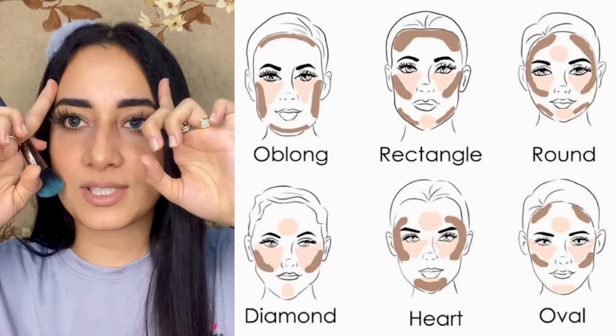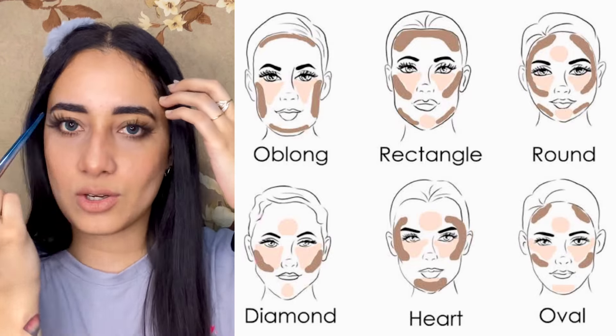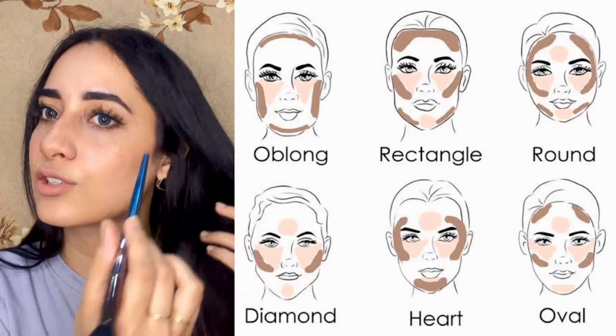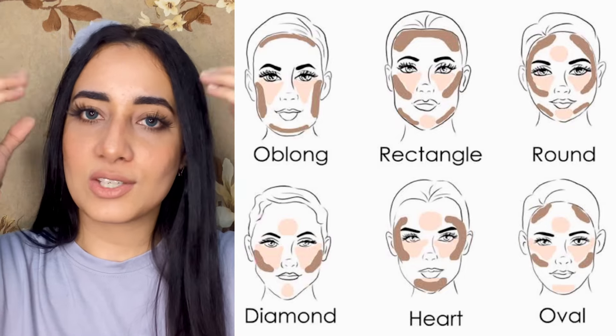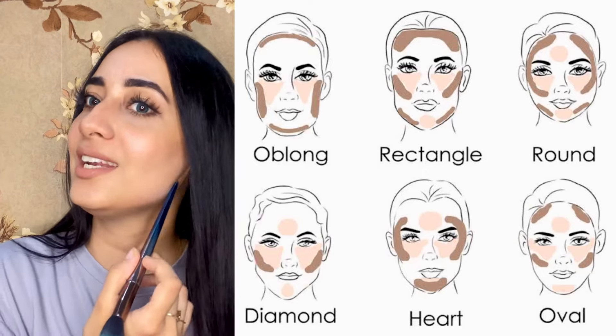Before introducing the product, let me tell you where to apply contour. Take a brush and go on your cheeks — you'll find depth at the cheekbones. Sculpt along that area. For the forehead, if you have a large forehead like me, do contour on that area. If you have a smaller forehead, skip the forehead contour — it will only make it look bigger. For a diamond or heart face shape, contour the sides of the forehead as well since that's where the face is wider.